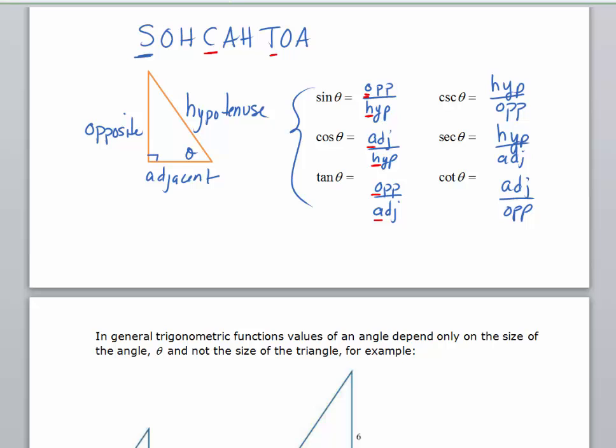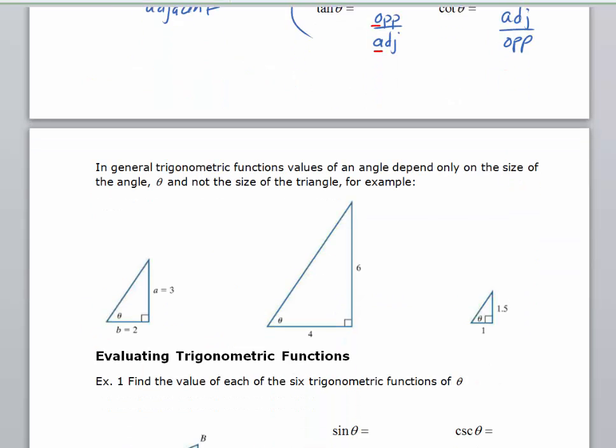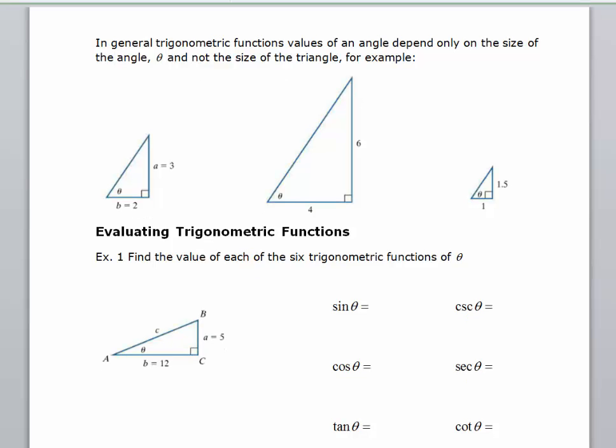Those are definitions of the six trigonometric functions, and let's look at three triangles. Basically, a trigonometric function is a function, which means for every input, there's only one output. So an angle that's in a small triangle, and you have that same exact angle in a larger triangle, the trigonometric function is going to be the same.